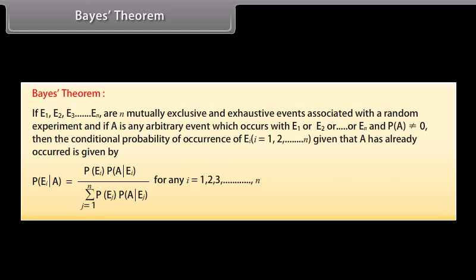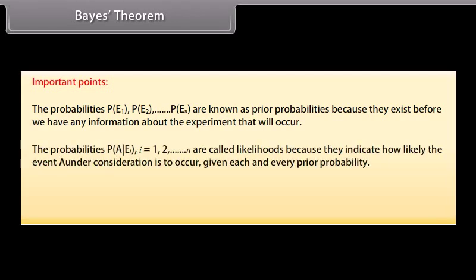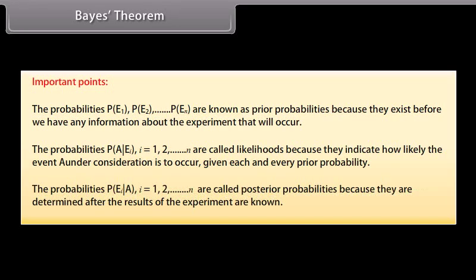Important points: The probabilities P(E1), P(E2), ..., P(En) are known as prior probabilities because they exist before we have any information about the experiment. The conditional probabilities P(A|Ei) are called likelihoods because they indicate how likely event A is to occur given each prior event. The conditional probabilities P(Ei|A) are called posterior probabilities because they are determined after the results of the experiment are known.